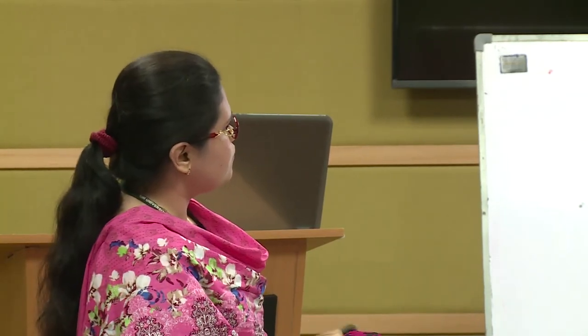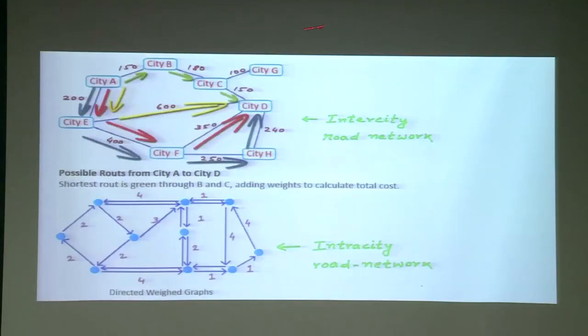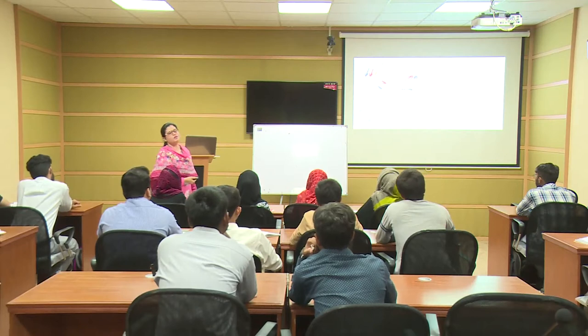In a weighted graph, distances are mentioned between cities. The answer changes — we add all the distances and take the total cost. When the total cost is least among all routes, that is the shortest path. As you can see, the shortest path becomes A-B-C-D. This is also a weighted and directed graph.